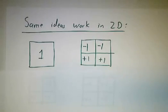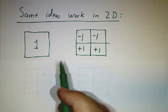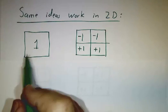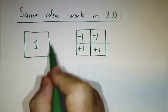The same ideas can work in two dimensions. If we're thinking about functions on the unit square rather than functions on the unit interval, here's a function, it's 1 everywhere on the whole square.